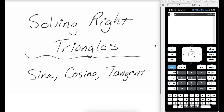In this video, we are going to solve right triangles using some basic right triangle trig. We're going to be using sine, cosine, tangent, and we're also going to be using the calculator to figure out some values. So let's get started.